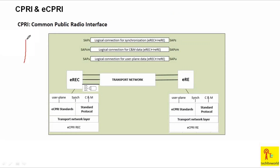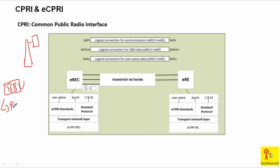So what is CPRI? CPRI is Common Public Radio Interface. In a legacy network, we have our tower and our baseband unit.